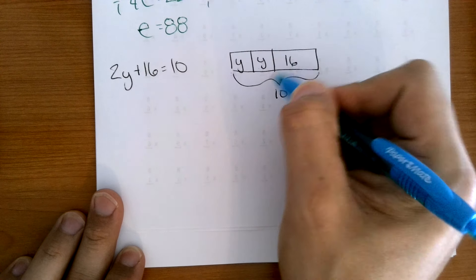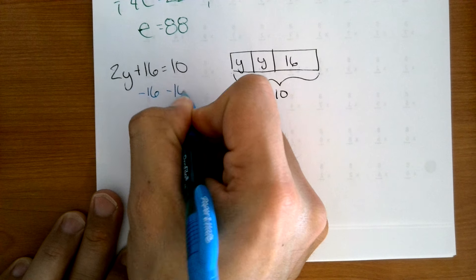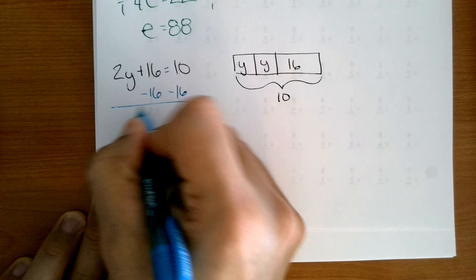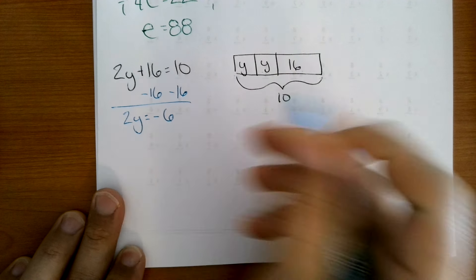The first thing we want to do is take off the 16. We do that by subtracting it, since we're adding it here. 2y equals negative 6.